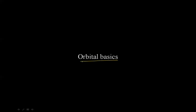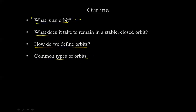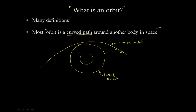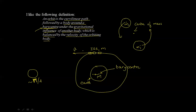Hello everyone and welcome back to Orbital Basics. Previously, we learned what is an orbit. We saw that when we googled the phrase 'what is an orbit,' we get a definition that is not quite accurate, because when we draw it, there is a little bit of confusion. We then learned to define what an orbit is using a slightly better and more accurate explanation, which involved a term called barycenter.